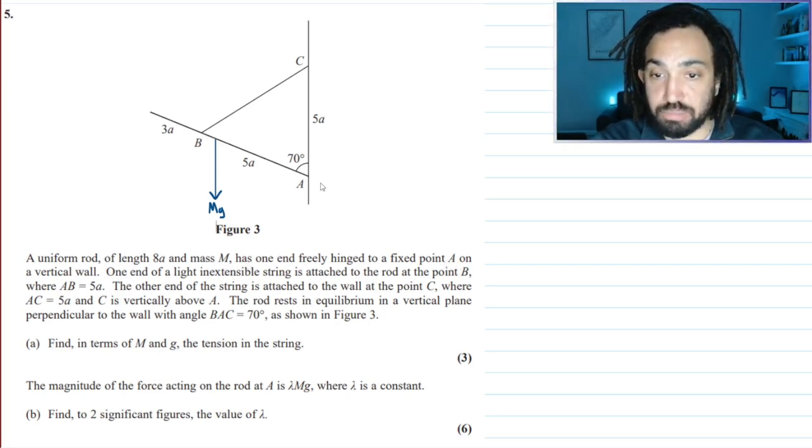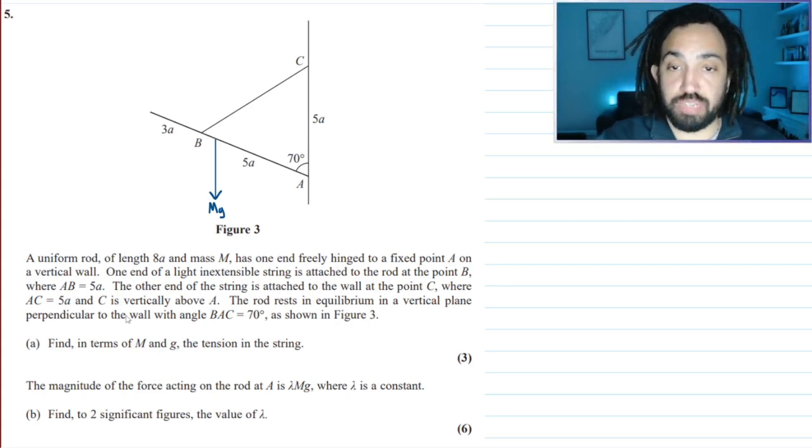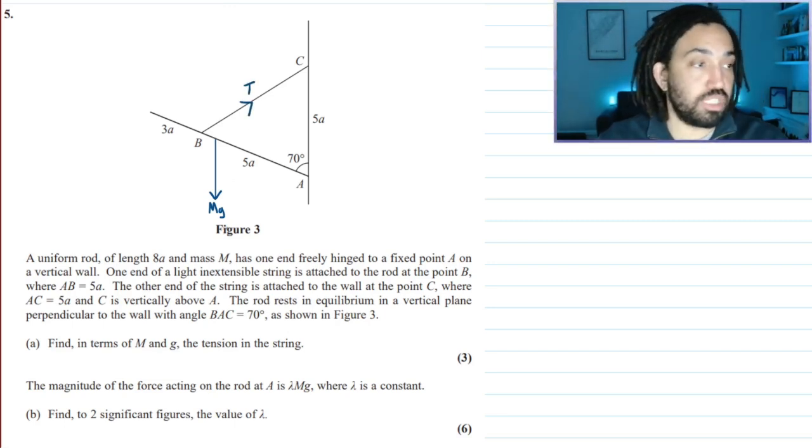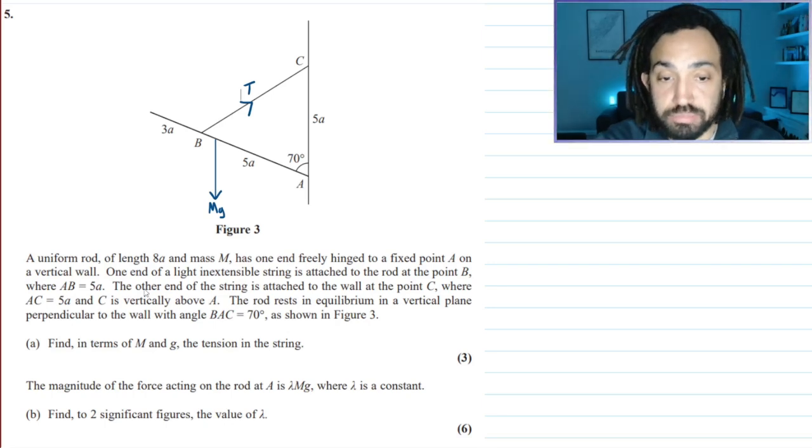The weight acts in the center of the rod, so 4a on either side. It's freely hinged fixed at point A on a vertical wall. One end of the light string is attached to the rod at point B, and that is attached to C. If it's a string, it means there must be tension, and I will draw the tension like this keeping the rod up. It's a force pushing the rod up.